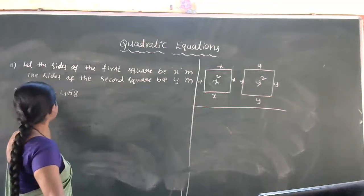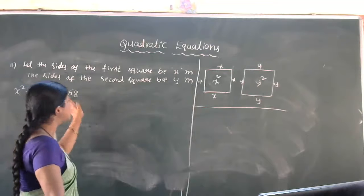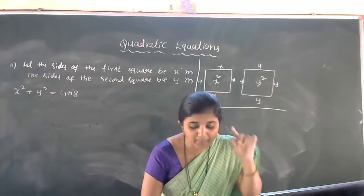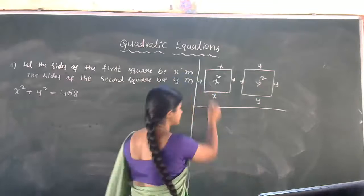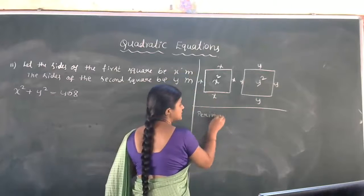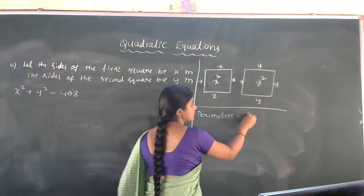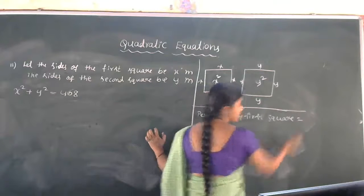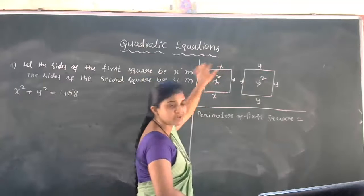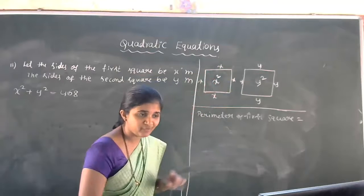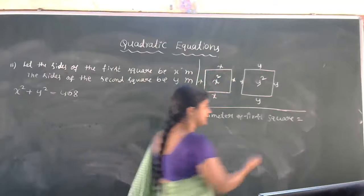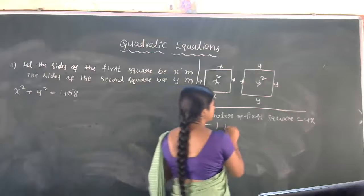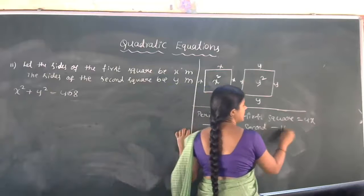According to the first statement, x² + y² = 468. Now let us work out the perimeter concept. The perimeter of a square is 4 times the side. So the perimeter of the first square is 4x, and the perimeter of the second square is 4y.